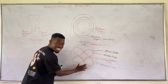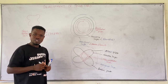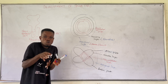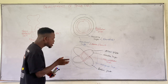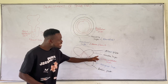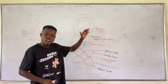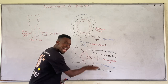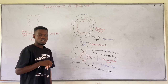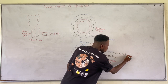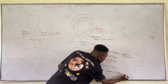The alar plate is the dorsal thickening of the mantle layer, and the basal plate is the ventral thickening of the mantle layer. The alar plate, which is the dorsal part of the mantle layer, will later become our posterior gray horn, while the basal plate will become our anterior gray horn. So the alar plate and basal plate are both part of the mantle layer — it is because the mantle layer has undergone thickening that it forms the alar plate and the basal plate.